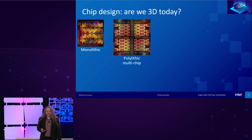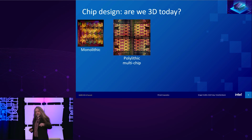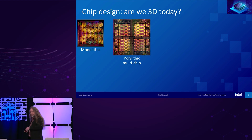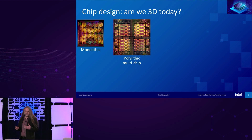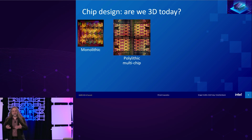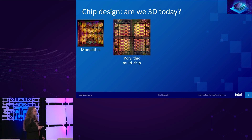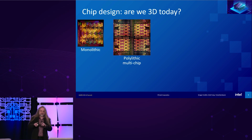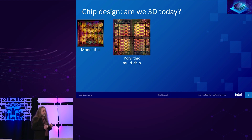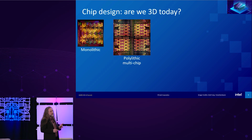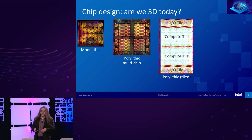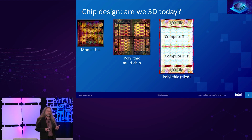For various optimization reasons — maybe performance, maybe cost — we started looking at polyolithic multi-chip architectures. Each one of these chips is fundamentally the same; it has all the basic ingredients. We just combine them together to make larger virtual monolithic systems. It's an interesting approach, but it's missing an opportunity.